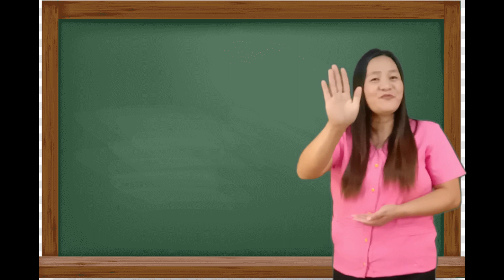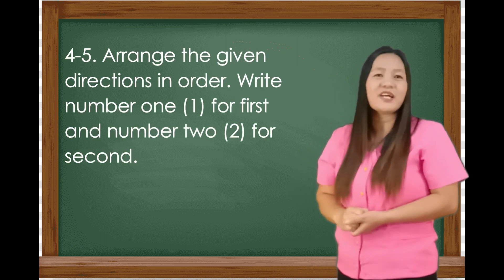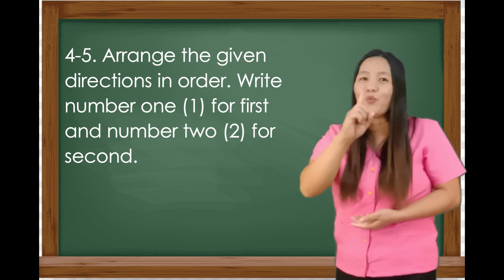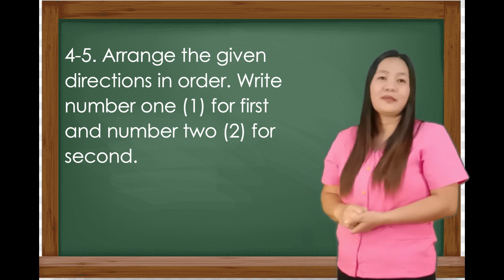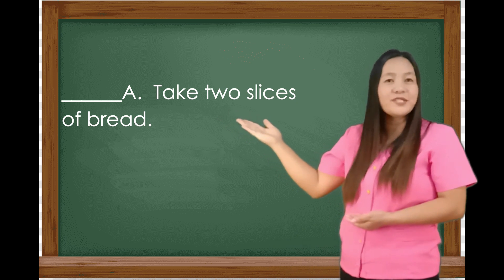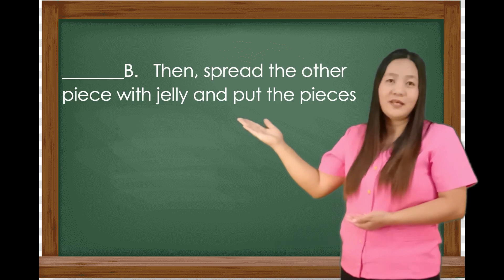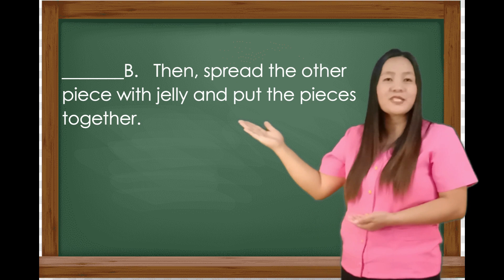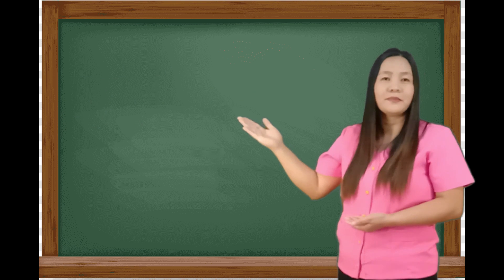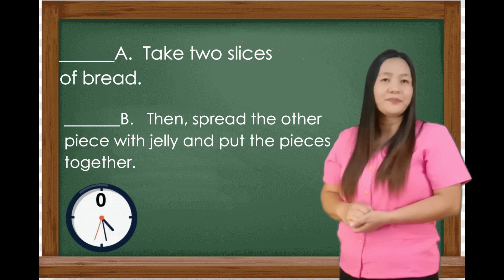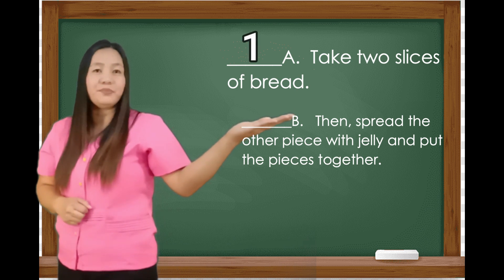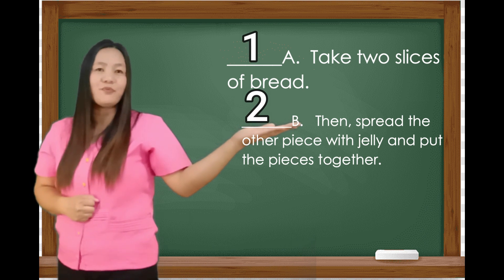For numbers 4 and 5, arrange the given directions in order. Write number 1 for the first and number 2 for the second step. Letter A: Take 2 slices of bread. Letter B: Spread the other piece with jelly and put the pieces together. What is your answer? Letter A will be number 1, while Letter B will be number 2. Take 2 slices of bread, then spread with jelly and put the pieces together.